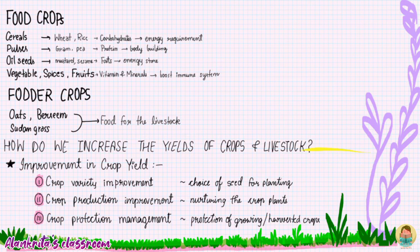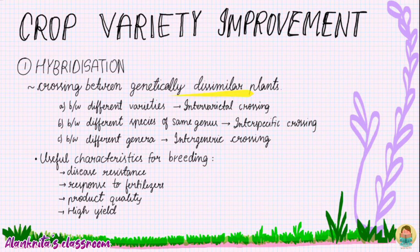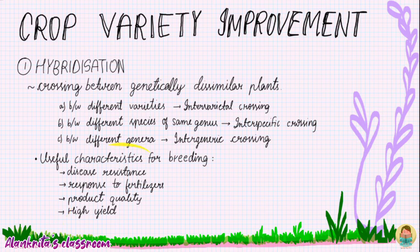On page 3, crop variety improvement is the first method. In this we can learn about hybridization. Hybridization is crossing between genetically dissimilar plants. It can either be intervarietal, interspecific, or intergeneric. The useful characteristics for breeding are disease resistance, response to fertilizers, product quality, and high yield.